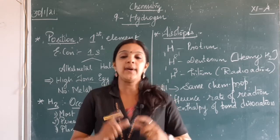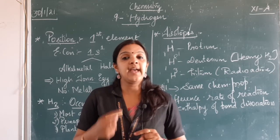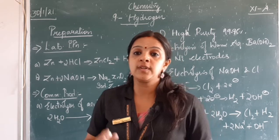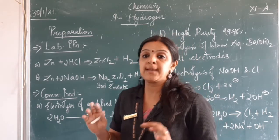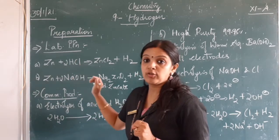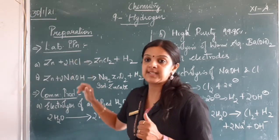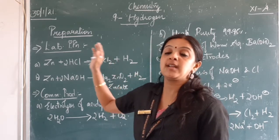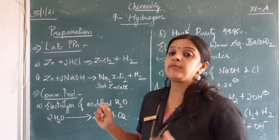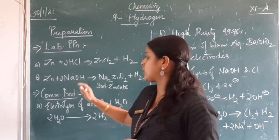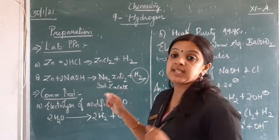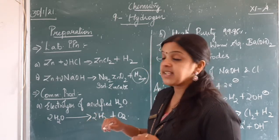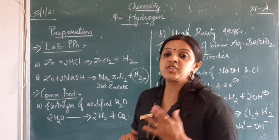Those are the main things to learn about the introduction to hydrogen. Now we will get into the preparation of hydrogen and then learn about its properties. The first one is the laboratory preparation, where zinc reacts with hydrochloric acid (or H+ ion) to give zinc chloride and hydrogen gas. There is also a preparation where zinc reacts with sodium hydroxide to form sodium zincate and hydrogen gas. These two are the laboratory preparations.